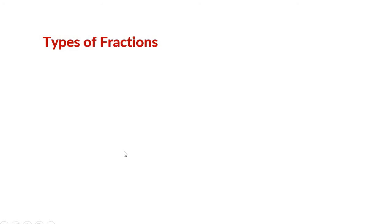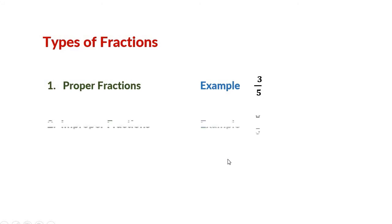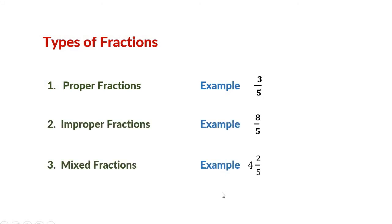There are mainly three types of fractions: proper fractions, improper fractions, and mixed fractions. In proper fractions, the numerator is always smaller than the denominator. In improper fractions, the numerator is greater than or equal to the denominator. In mixed fractions, there is a whole number along with a fraction. We will learn about mixed fractions in the next class.